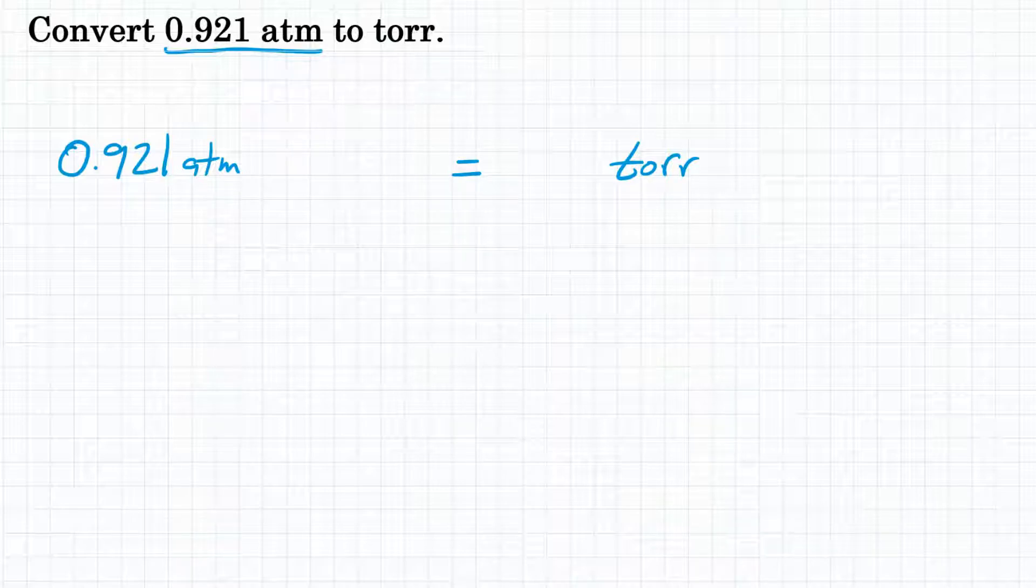So to convert between atmospheres and torr, we will need to multiply by a conversion factor, by a fraction that I have denoted by the fraction bar in parentheses. And that fraction is going to relate these two units. Atmospheres will go on the bottom of our conversion factor, and torr will go on top, and that is so our units will cancel out.